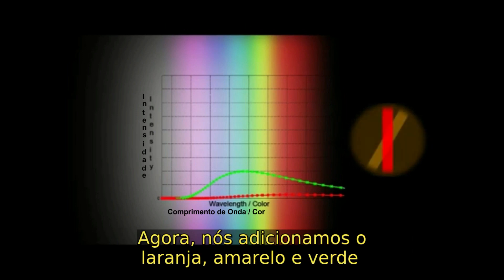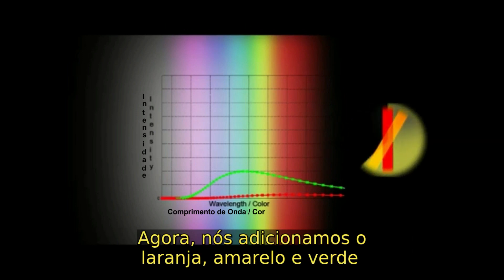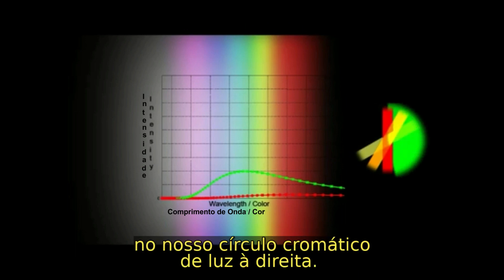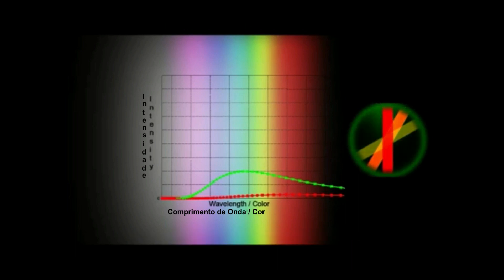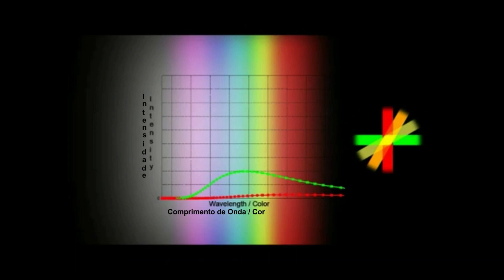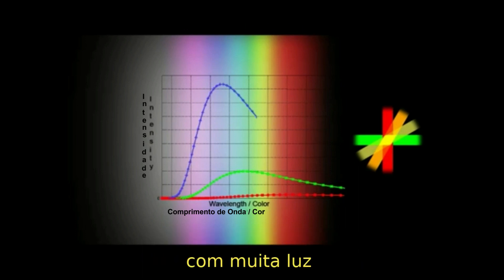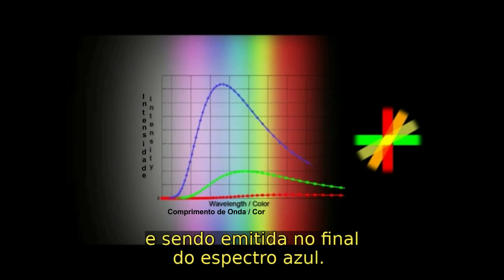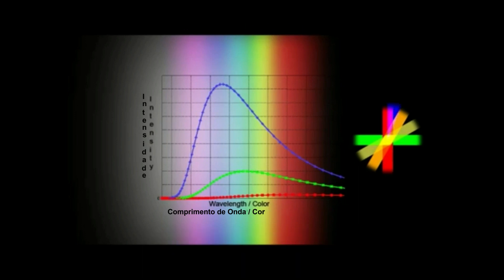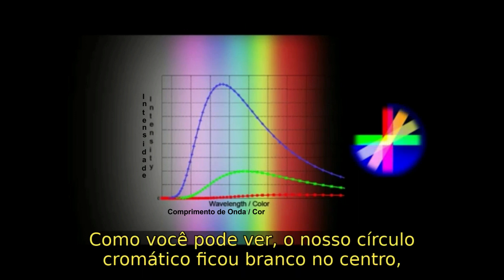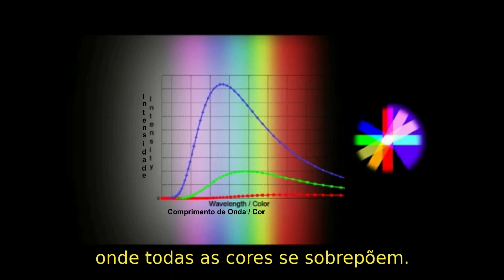So now we add orange, yellow, and green to our cauldron of light on the right. As you can see, the combination so far looks yellow. This third curve is for a really hot object — lots of light, with most of it being emitted toward the blue end of the spectrum. And as you can see, our cauldron is now pure white in the center where all the colors overlap.